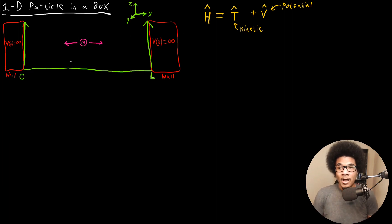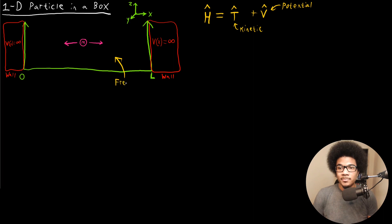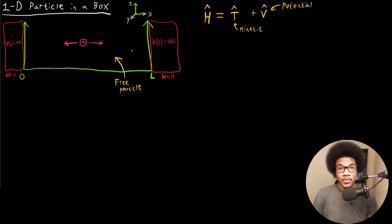So how do we define the Hamiltonian for this problem? If we look at it, inside the box the particle is functioning as a free particle. The box is empty — there are no other potentials acting on it inside the box. Inside the box it's free to move as a free particle, and we actually already know the Hamiltonian and acceptable wave functions and energies for the free particle problem.